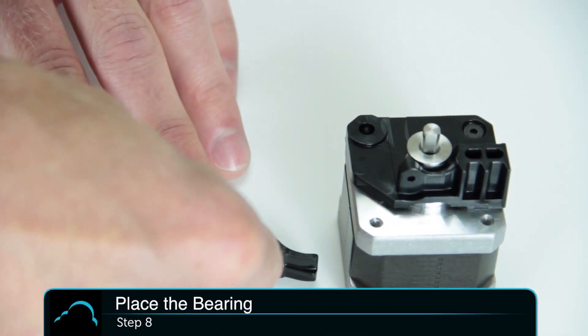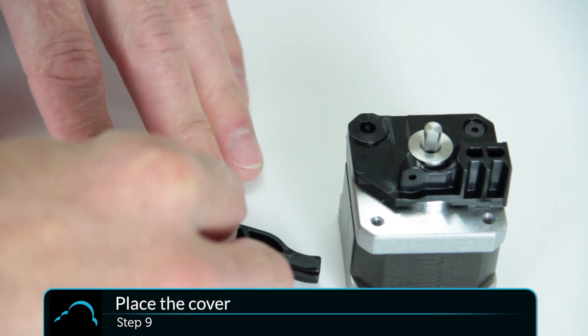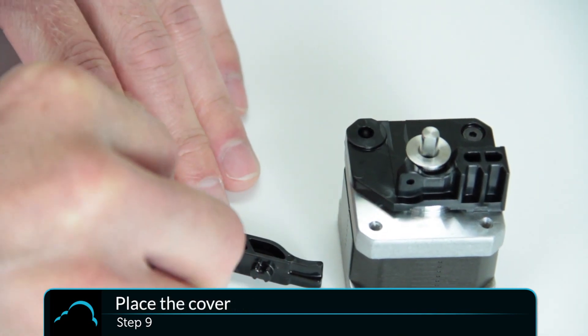Slip the bearing over the post of the bearing arm, then press the cover into place over the bearing so it fits snugly and flush with the bearing arm.